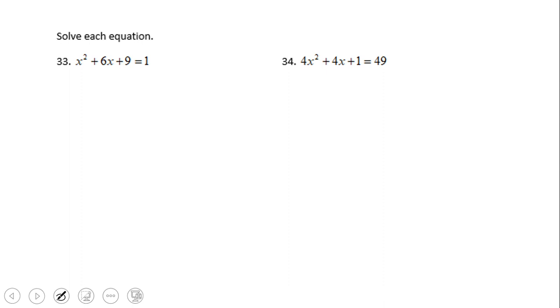Now let's take a look at these two equations, and you'll see why these equations are related to what we just did before. Number 33, if we take a look at this polynomial, x² + 6x + 9, we recognize that it's a perfect square.